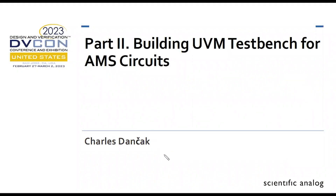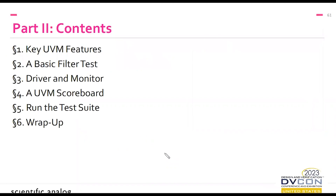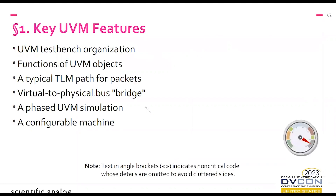This is Charles Danchak, and I'll be picking up where JHA left off. We're going to be building a UVM compliant test bench right on top of the fixture submodule that you created in part one. In part two, we'll look at the test bench organization at a high level, drill down into the purposes and code related to components like the driver, monitor, and scoreboard, and see how they're connected via TLM — transaction level model — pathways.